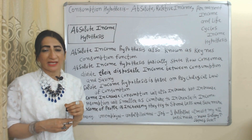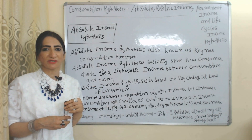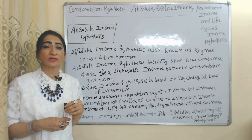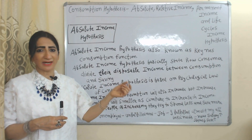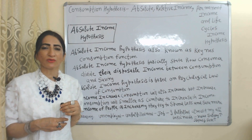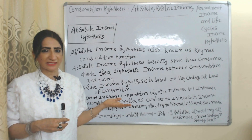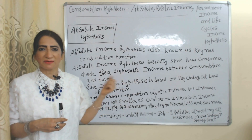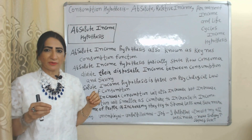Absolute income hypothesis, also known as the Keynes consumption function, basically states how consumers divide their disposable income between saving and consumption — that means some part of disposable income we save and some part we consume.